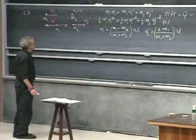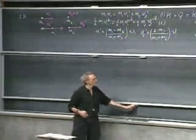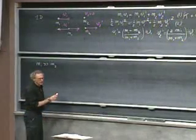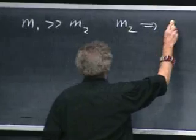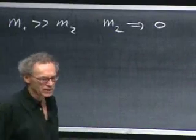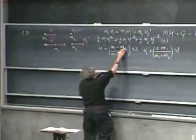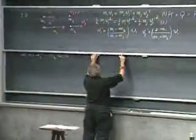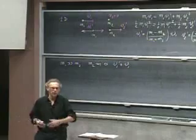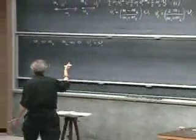Let's look at three interesting cases at the extremes. First, M1 much greater than M2 — let M2 go to zero, like a bowling ball colliding with a ping-pong ball. When M2 goes to zero, V1 prime equals V1: the bowling ball doesn't even see the ping-pong ball and continues unaltered. After the collision, the bowling ball continues with the same speed.